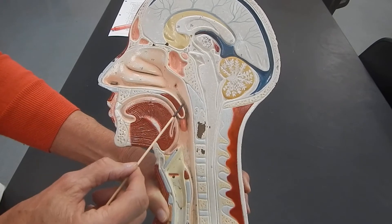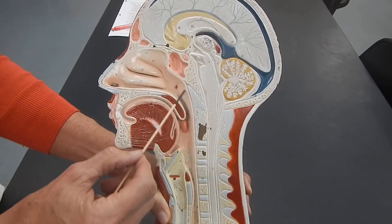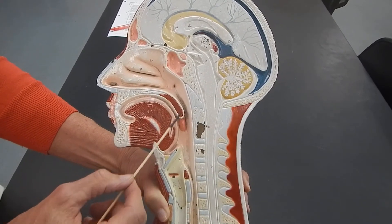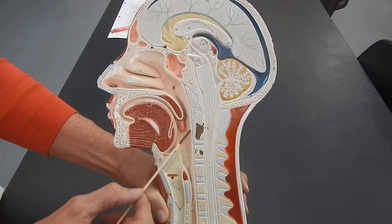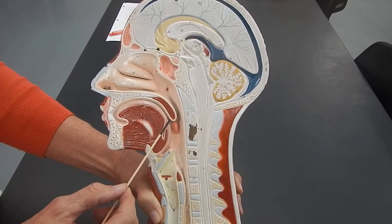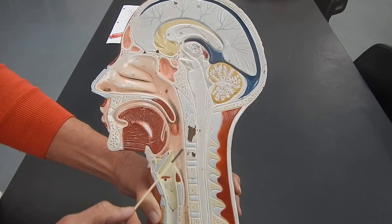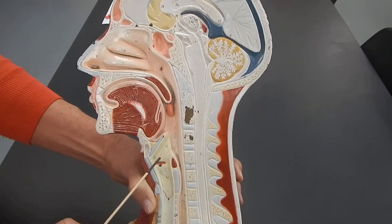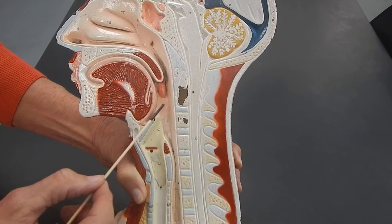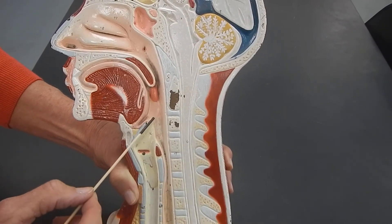The part of the pharynx that's right behind the nose is called the nasopharynx. The part of the pharynx that's right behind the mouth is called the oropharynx. And the part of the pharynx that is by this structure, which is called the larynx, this is called the laryngopharynx.